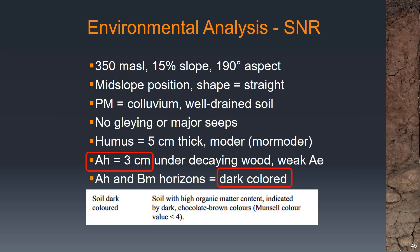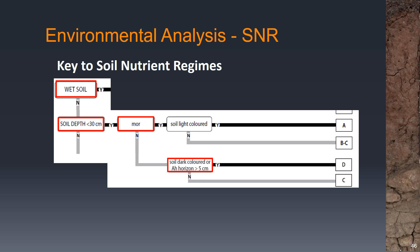In our case we have an AH of 3 centimeters, so not quite 5 centimeters, so it doesn't quite fulfill that criterion. The AH and BM horizons are dark colored, and we'd use our Munsell chart in the field to check whether the value was less than 4. For argument's sake, the soil was a little borderline — a small AH horizon not quite 5 centimeters — so we're going to say it's either D rich or C medium.